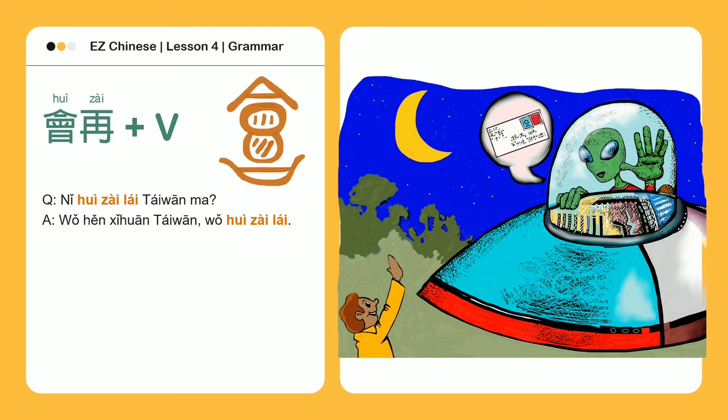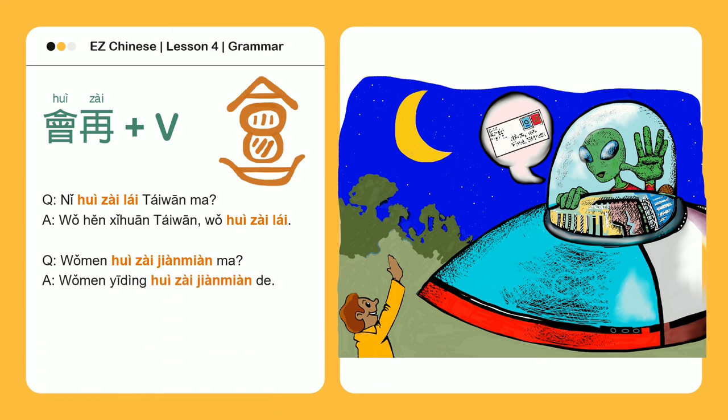再见面 — To see or meet again. 我们会再见面吗? — Will we be seeing each other again? 一定 — Certainly. 我们一定会再见面的 — We will certainly see each other again.